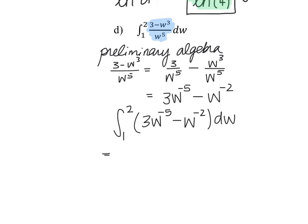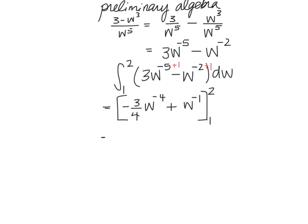We compute the integral from 1 to 2 of 3w to the negative fifth minus w to the negative second dw. For each term, we add 1 to the exponent and divide by the new exponent. Negative 5 plus 1 gives negative 4, so dividing gives negative 3/4 times w to the negative fourth. For w to the negative 2: adding 1 gives negative 1, and dividing by negative 1 changes subtraction to addition, giving plus w to the negative first. This is the antiderivative, placed in brackets, evaluated from 1 to 2.